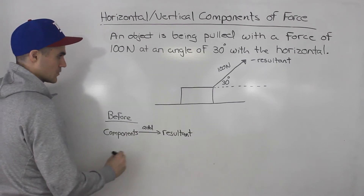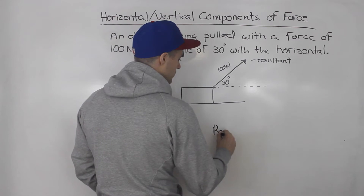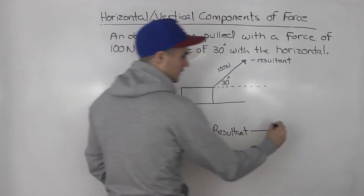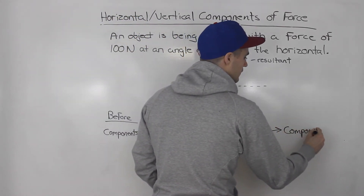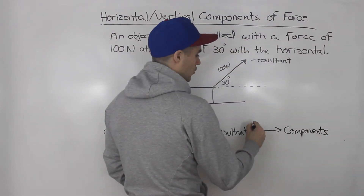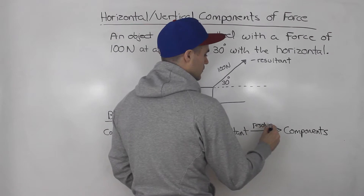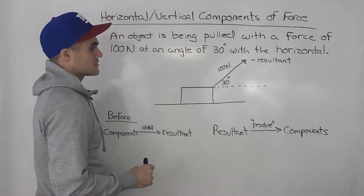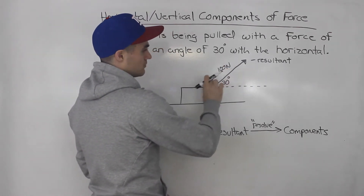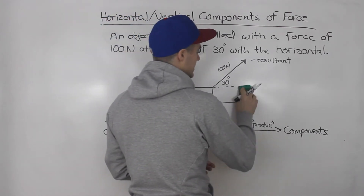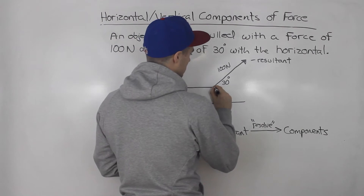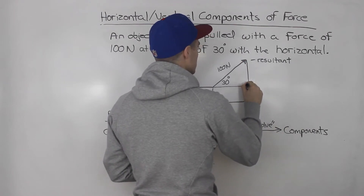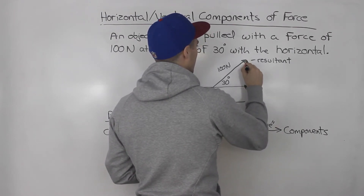In this case, what's happening is we are given the resultant, and we're breaking down this resultant into the component vectors — or resolving the resultant into the components. That's another word you might see come up: resolving a vector. So if we take this resultant and break it down into its components, it's like taking a horizontal vector plus a vertical vector.